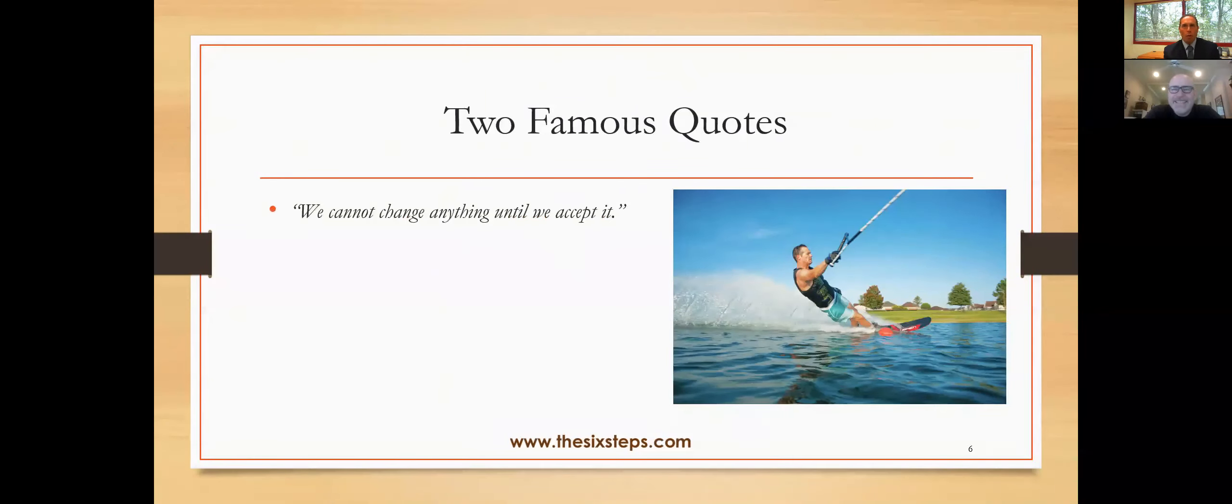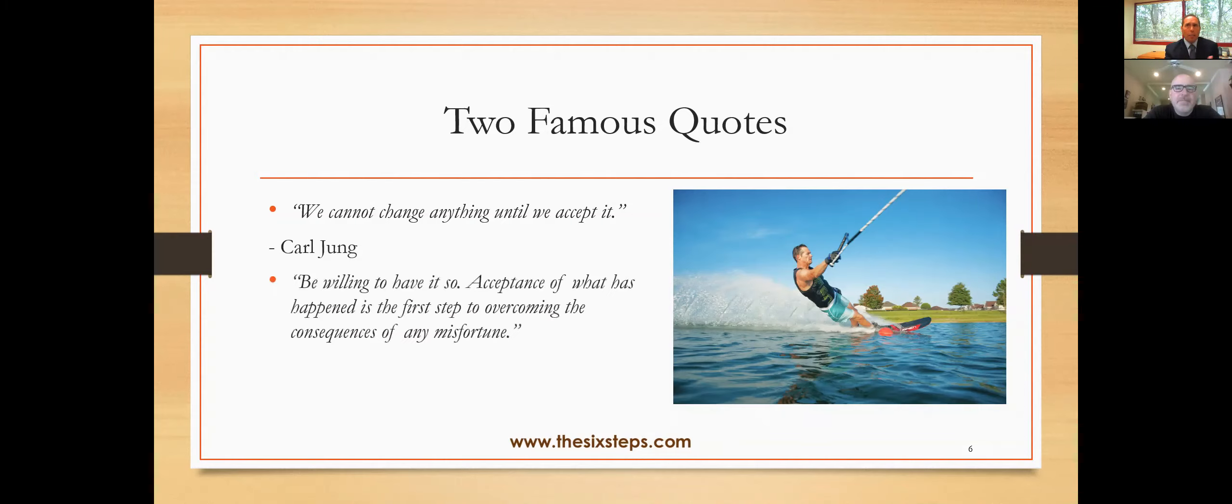So two famous quotes. First by two really famous psychologists, doctors of modern psychology. One is Carl Jung: we can't change anything until we accept it. And the second one, very simple by Dr. William James, the father of modern positive psychology, be willing to have it. Acceptance of what has happened is the first step to overcoming consequences of anyone's fortune. And that really speaks to me.